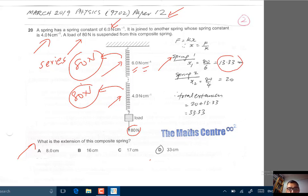We will do the same for spring 2. For spring 2, when you apply a force of 4 Newton, the extension is 1 cm. Therefore, when you apply 80 Newton, the extension is 20 cm, 80 divided by 4.